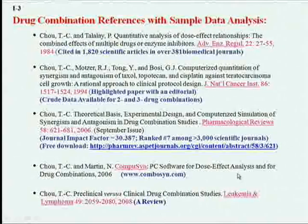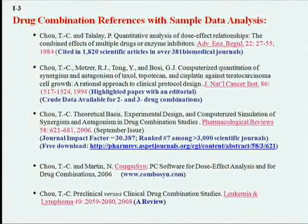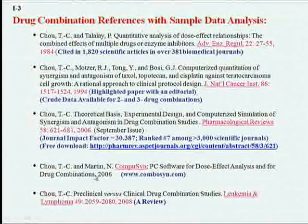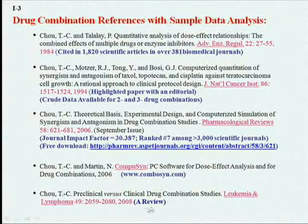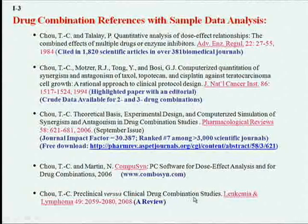The first generation was published over 20 years ago, written by my son Joseph. Later, the second generation was published as a DOS-based program, written by Michael Hayball of Cambridge, England. The third generation computer software called CompuSyn was written by Nick Martin of MIT and just published recently. I also recently published a review article in the clinical journal Leukemia and Lymphoma, which is an abbreviated review and also gives examples.